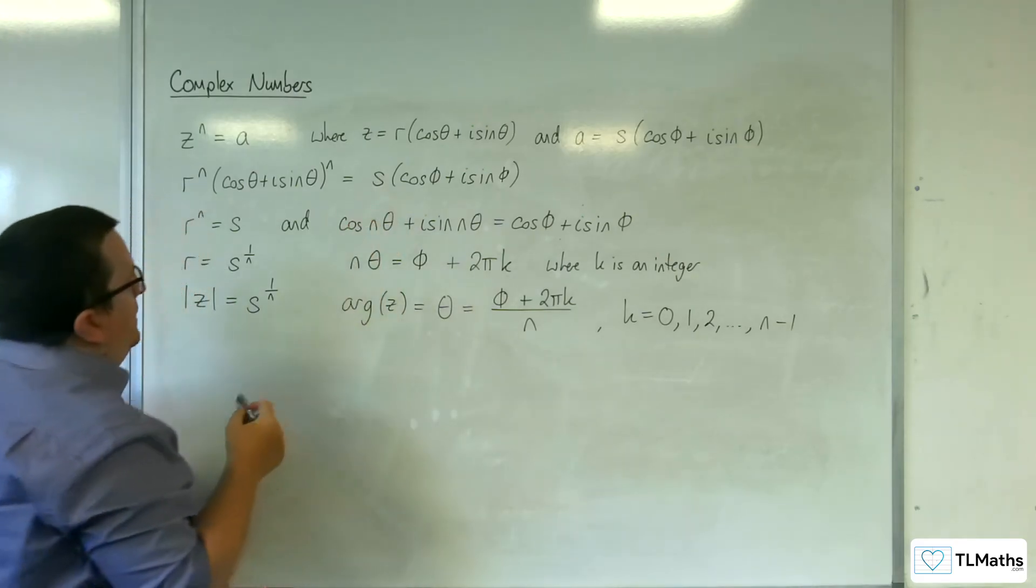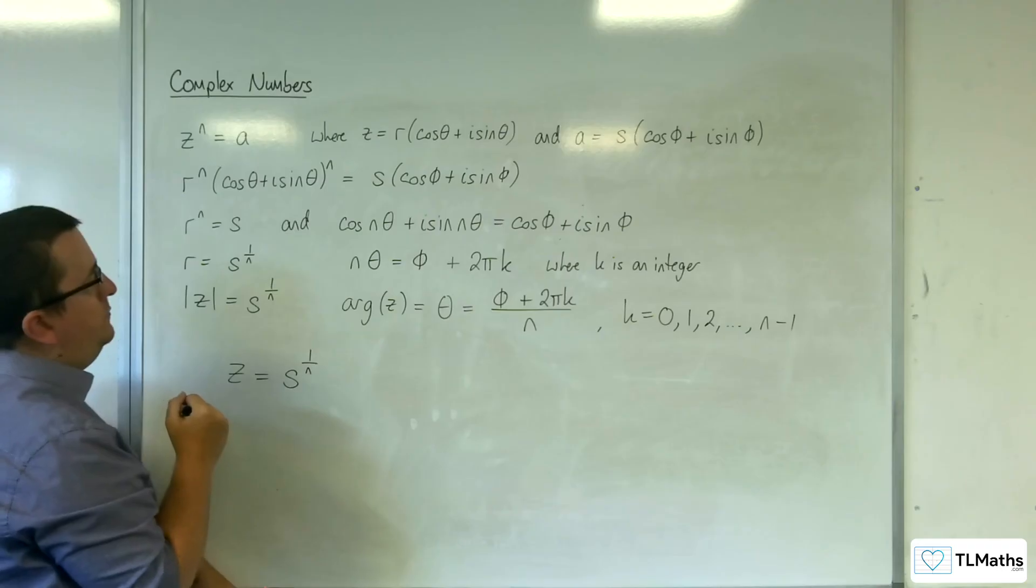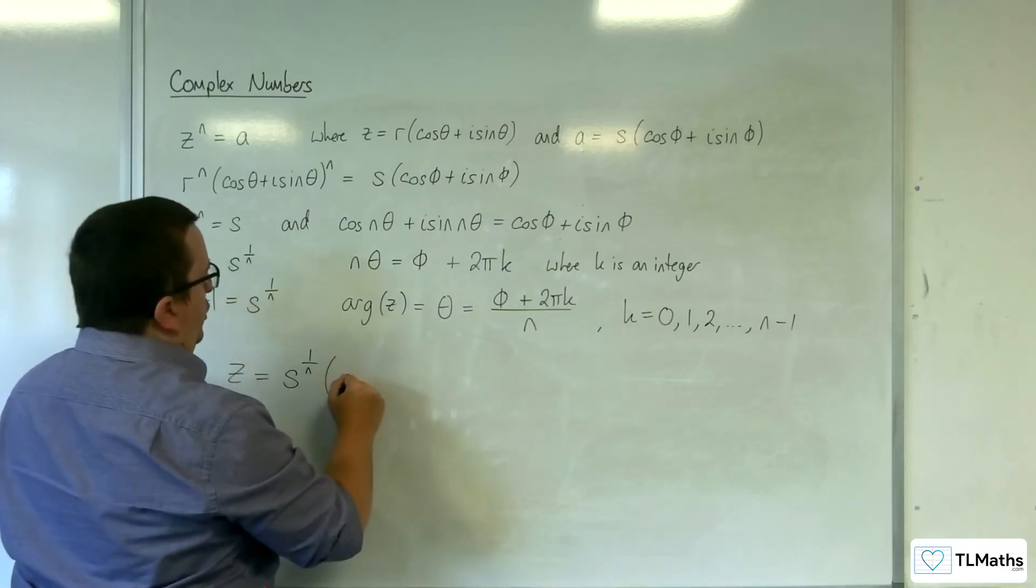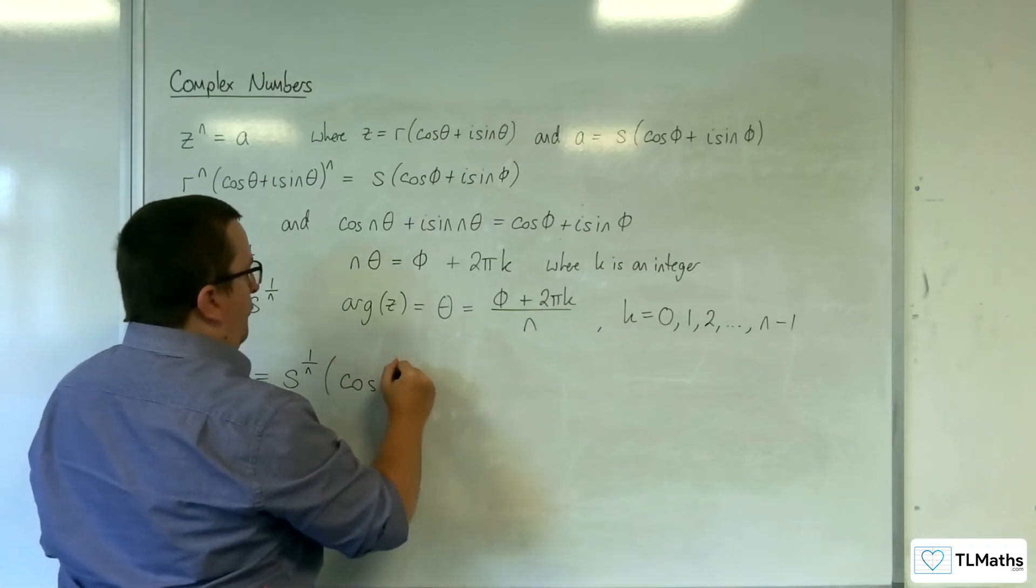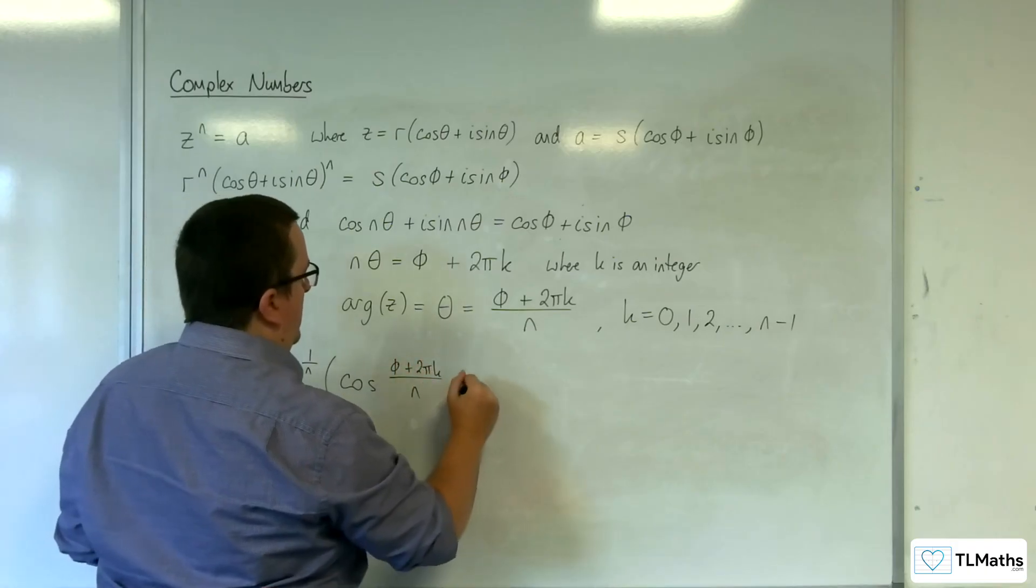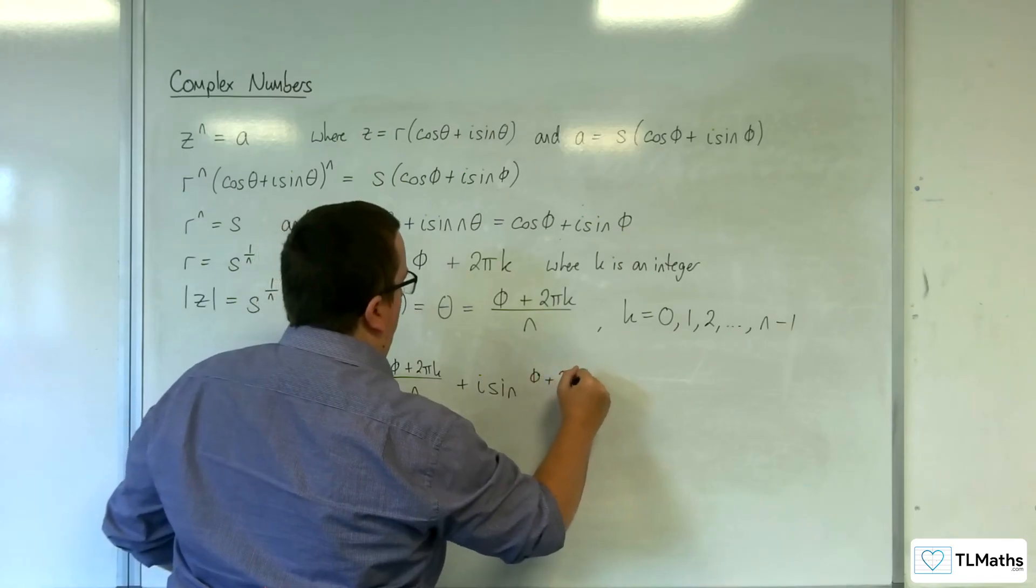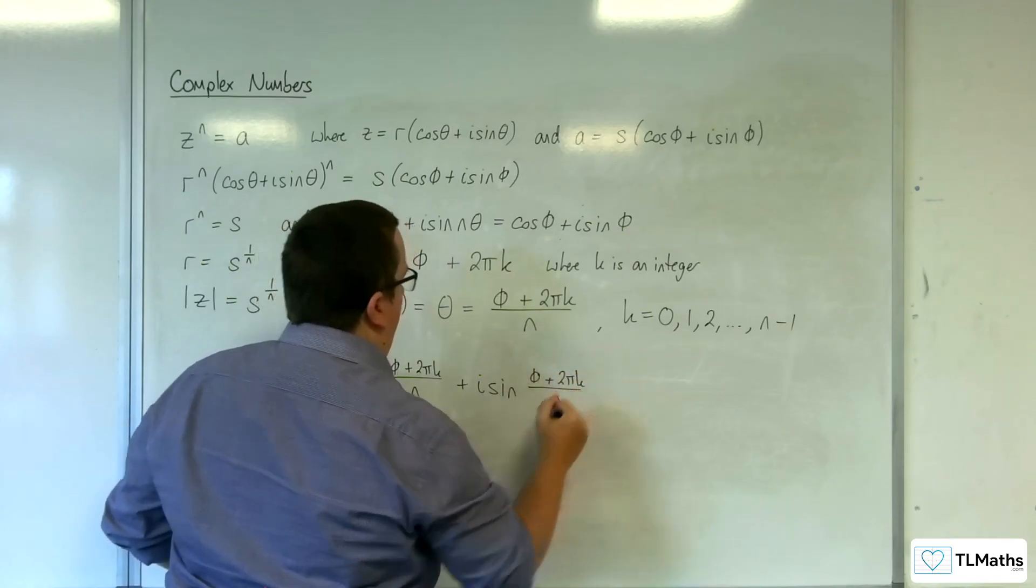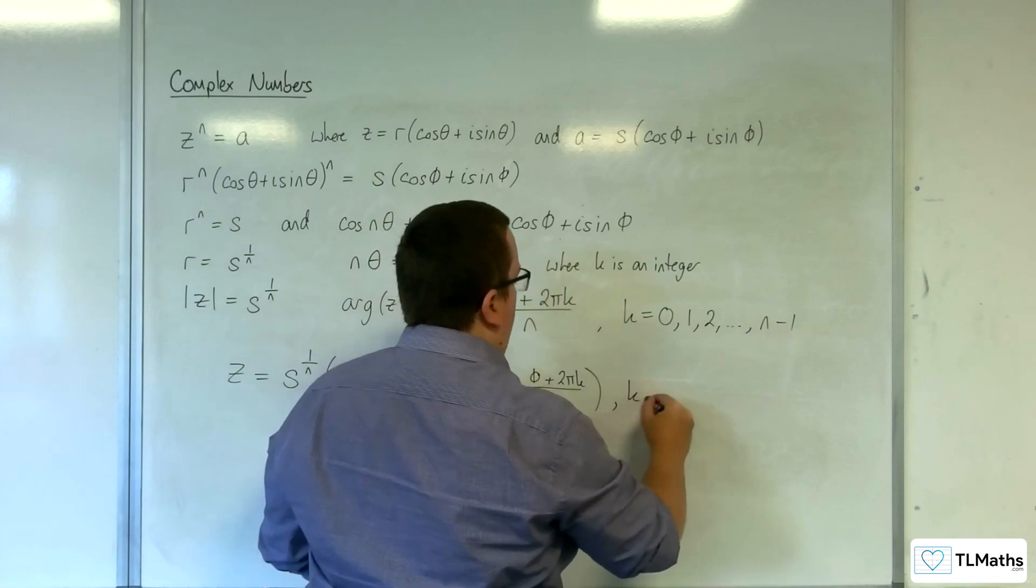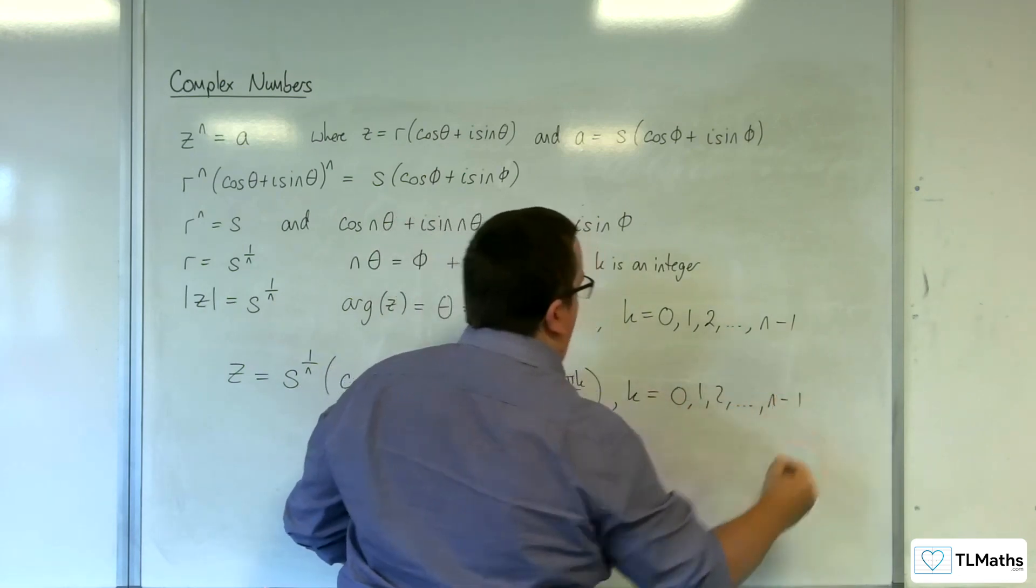So if you're going to write it, z must be equal to s to the power of 1 over n times cosine of phi plus 2 pi k over n plus i sine phi plus 2 pi k over n, where k is 0, 1, 2, dot, up to n minus 1.